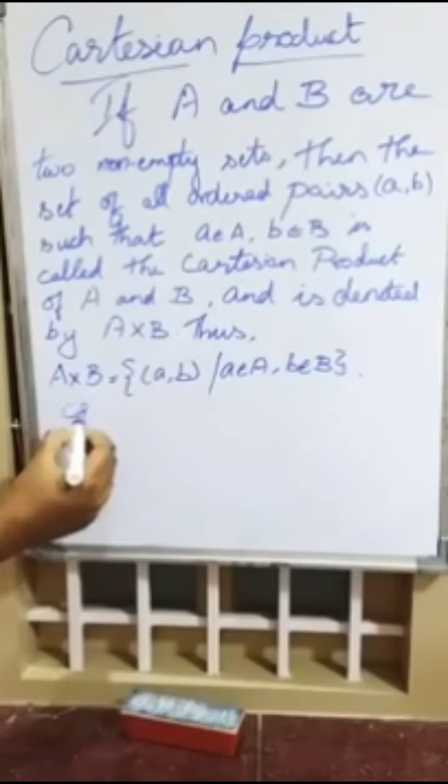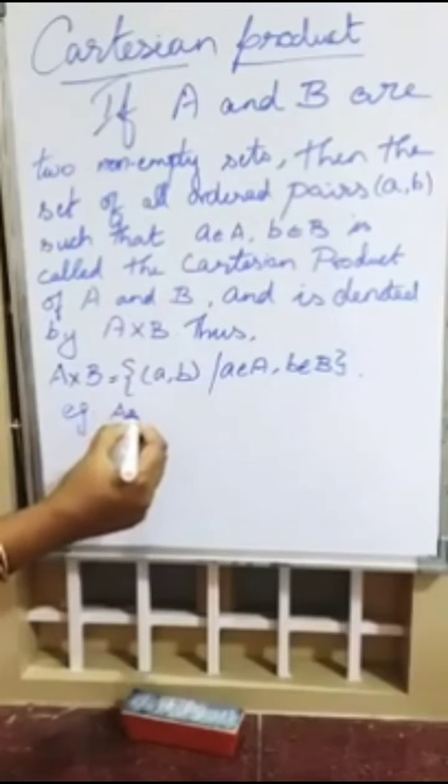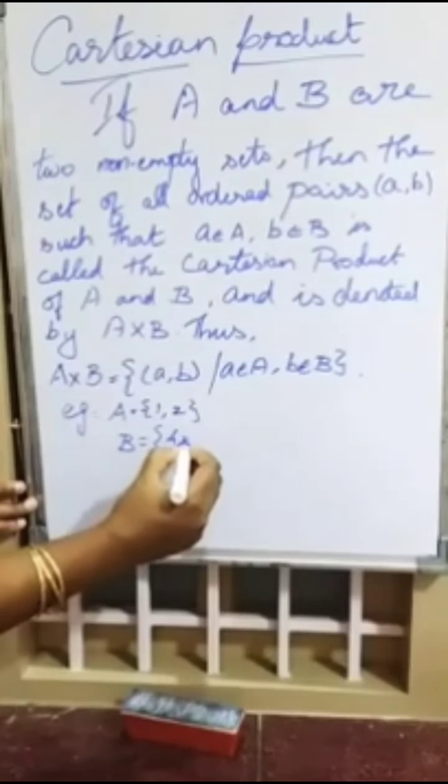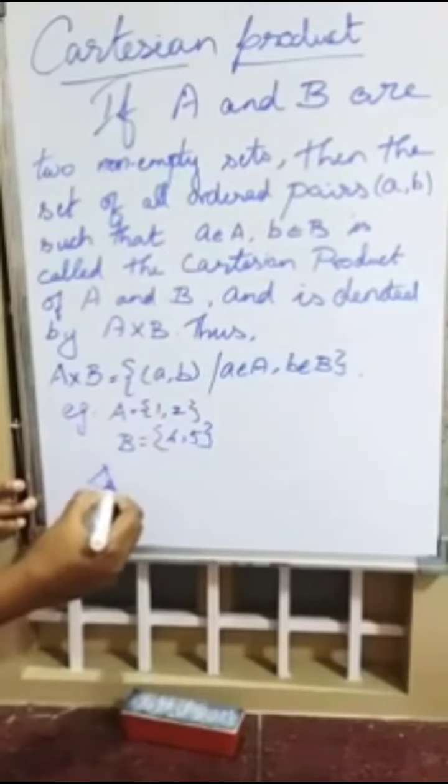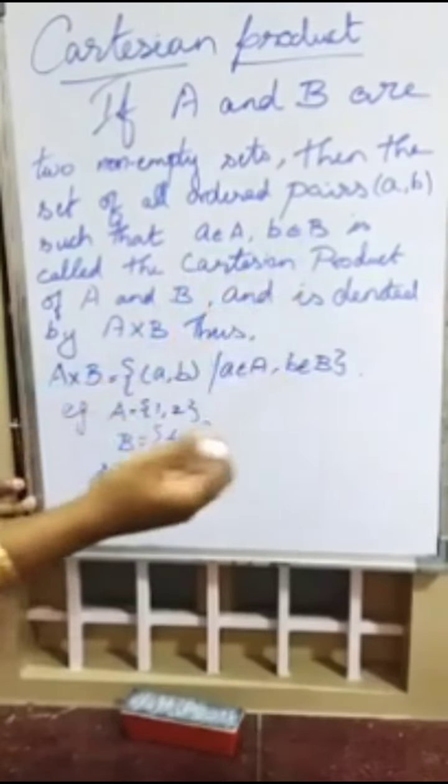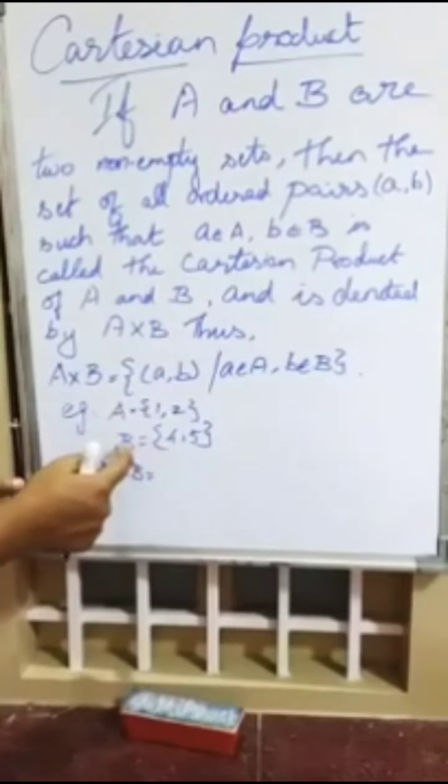Once again, one more example. If you take the set A equal to 1, 2 and the set B equal to 4 and 5, the Cartesian product of A cross B is equal to, from the definition, a belongs to A and b belongs to B. That is, 1 belongs to A and 4 belongs to B.